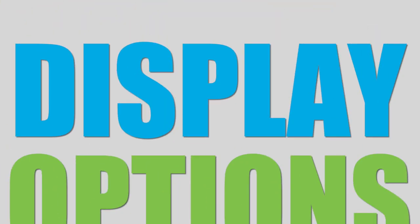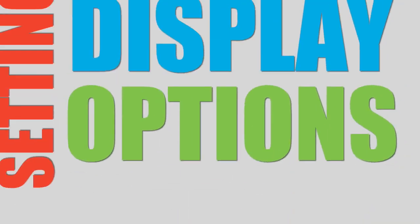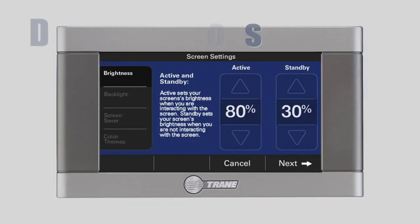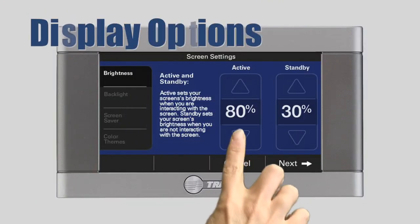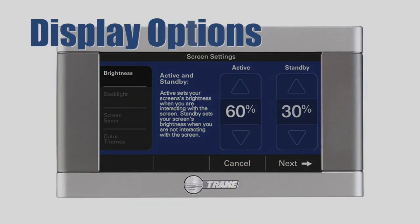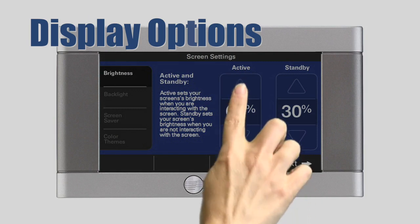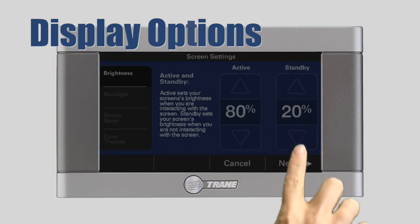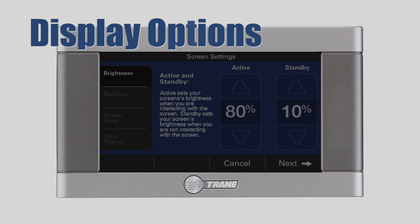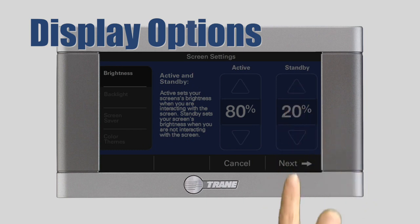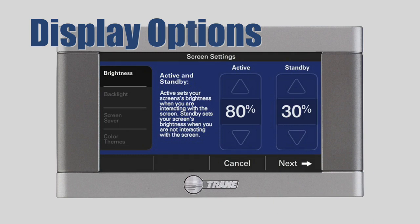Setting Display Options. The first setting we'll adjust is the screen brightness. Using the up and down arrows, select the desired brightness level for the active and standby modes, and then press Next. Or, if you're happy with the default settings, simply press Next.